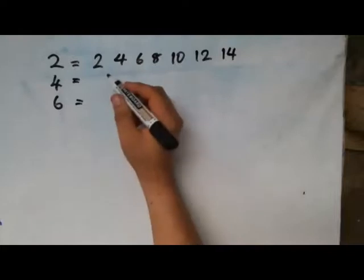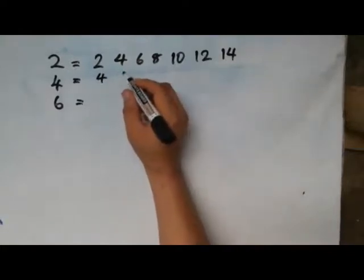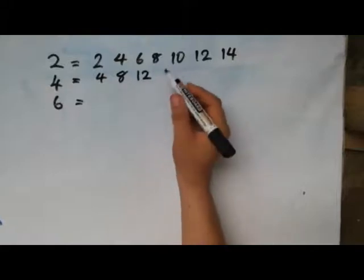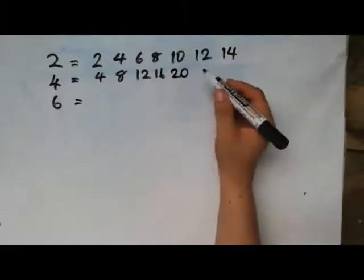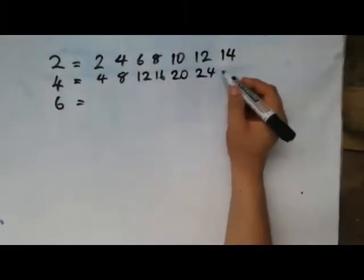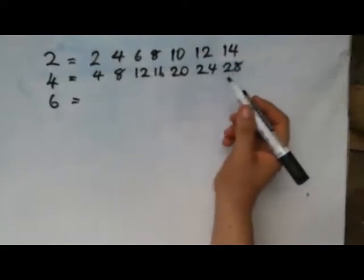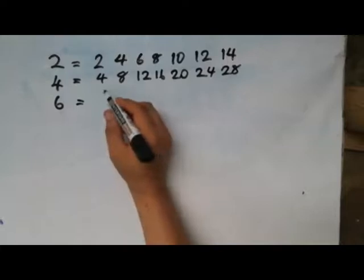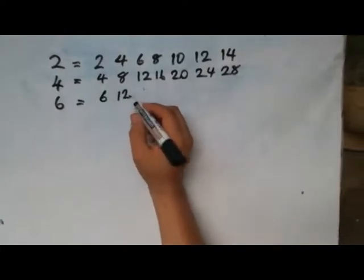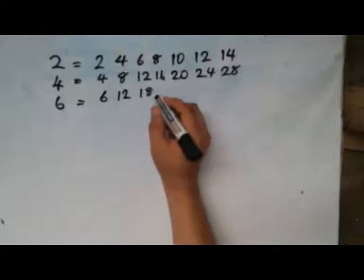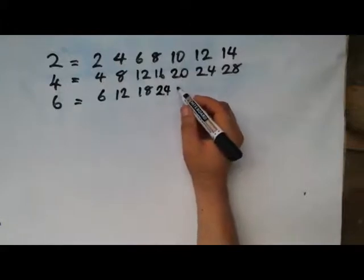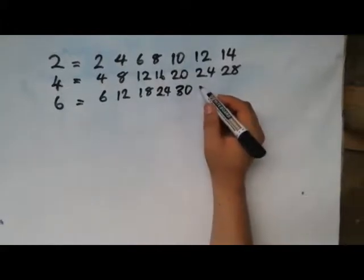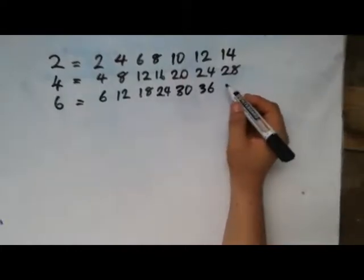Now go to the second number. 4 times 1 is 4; 4 times 2 is 8; 4 times 3 is 12; 4 times 4 is 16; 4 times 5 is 20; 4 times 6 is 24; 4 times 7 is 28. Then for 6: 6 times 1 is 6; 6 times 2 is 12; 6 times 3 is 18; 6 times 4 is 24; 6 times 5 is 30; 6 times 6 is 36; 6 times 7 is 42.